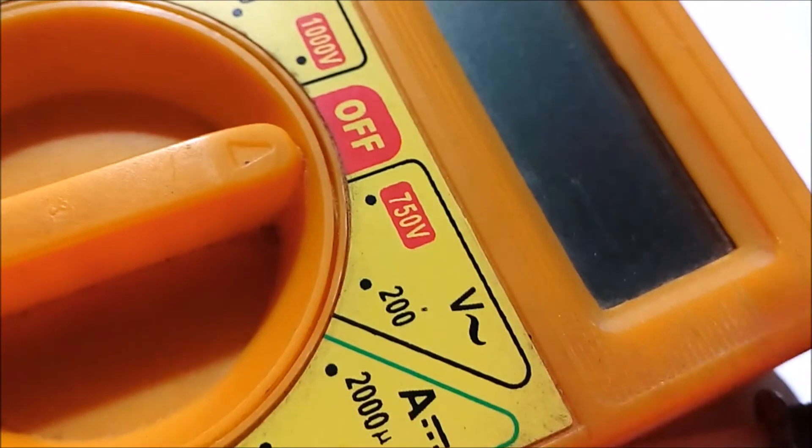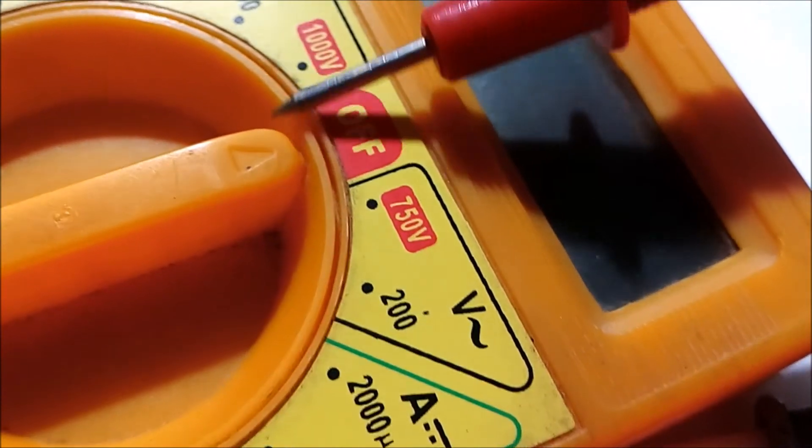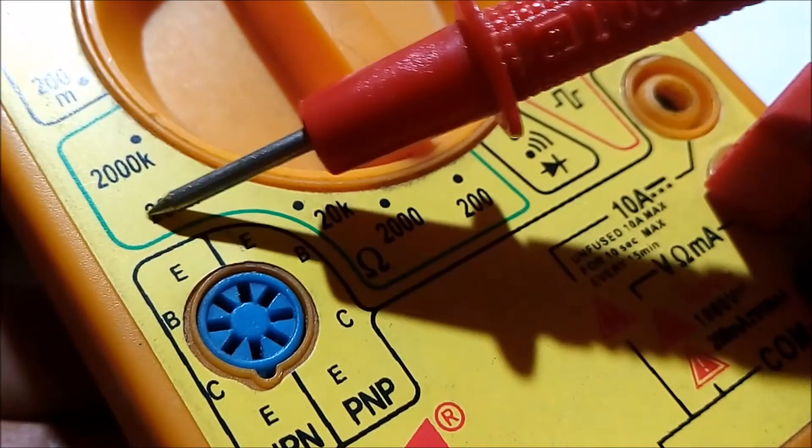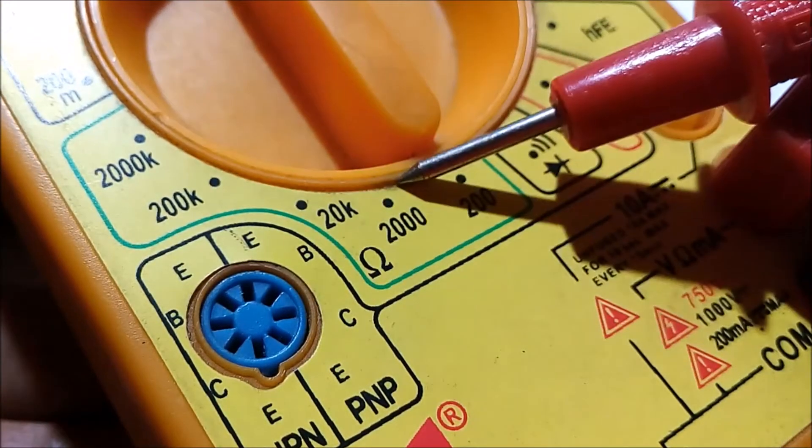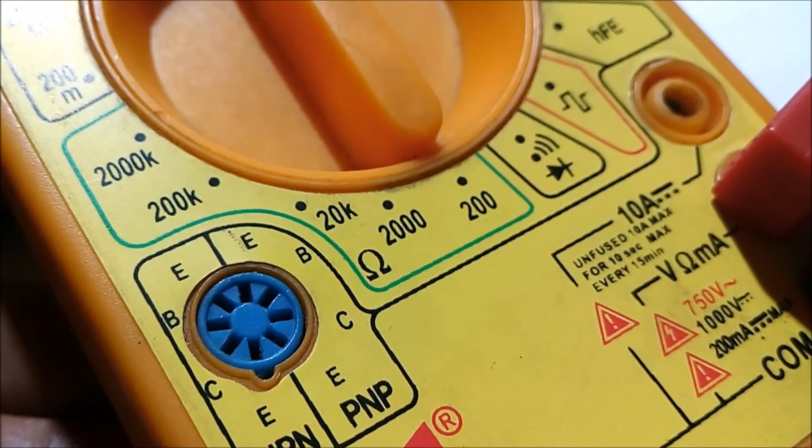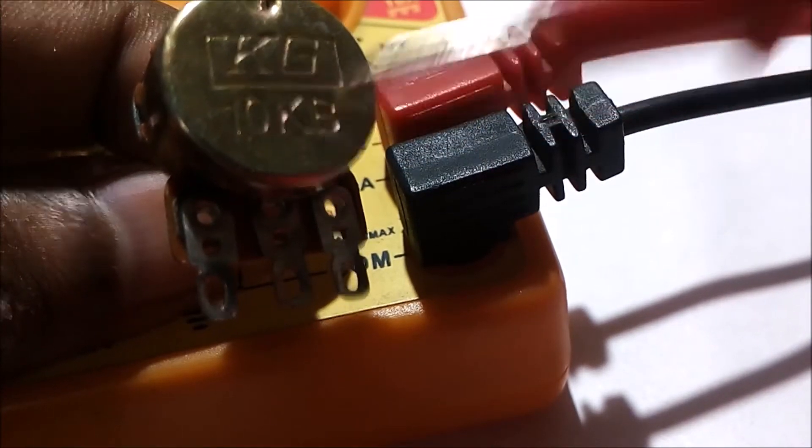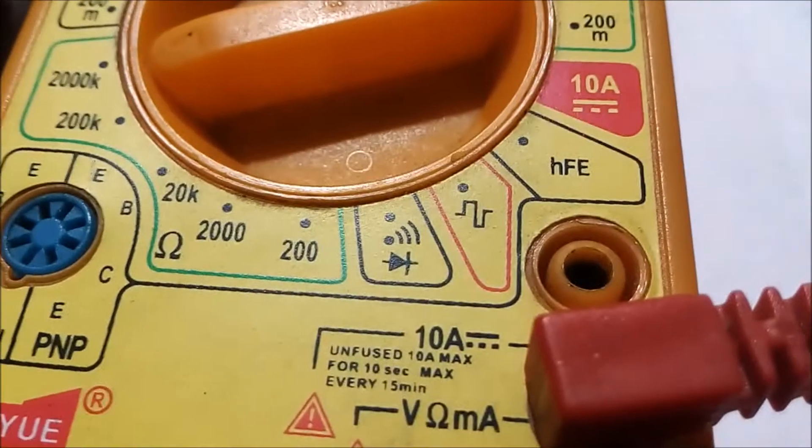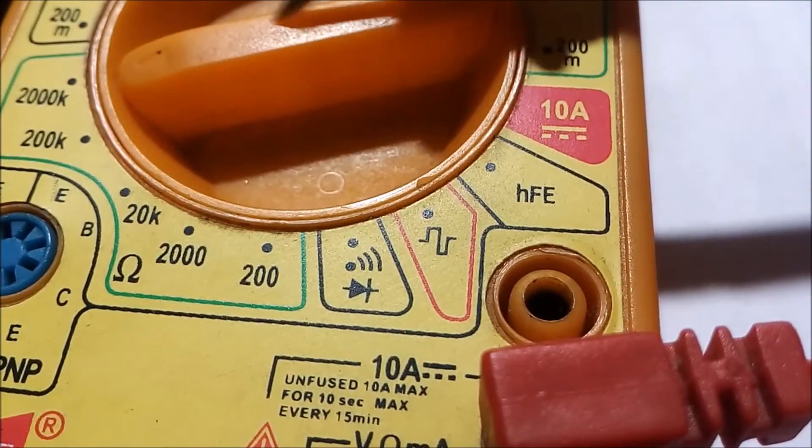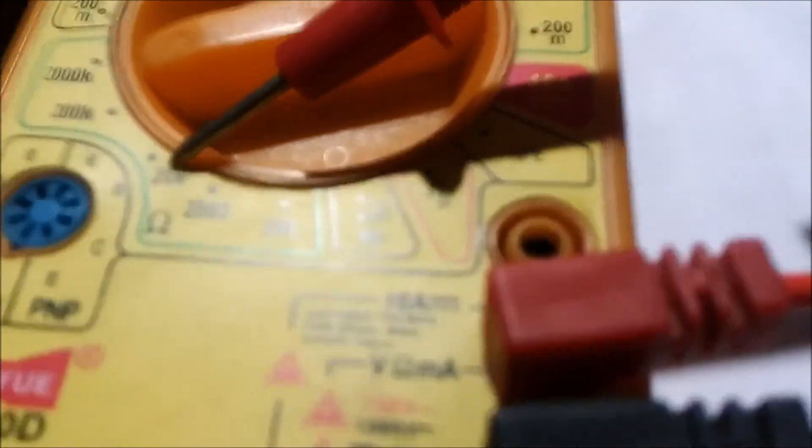Now I have to move this range switch in resistance range to measure the value of resistance. As my variable resistor value is 10 kOhm, I have to put my range switch to 20k.